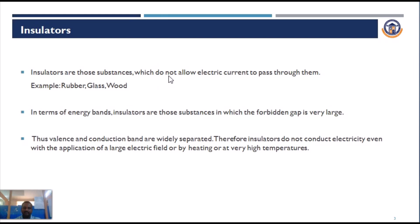Let us discuss insulators in detail. An insulator is a substance which does not pass any electricity. The best examples are rubber, glass, and wood. In terms of energy band theory, there is a wide gap between the valence band and the conduction band — the forbidden gap is approximately 7 to 8 electron volts. Therefore, insulators cannot conduct any electricity even with the application of a large electric field or at very high temperatures.